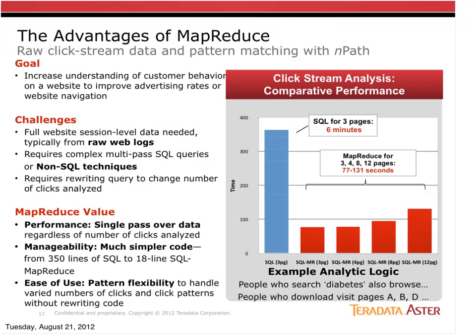This is an example of a customer we worked with who was trying to do pathing analysis across their website — looking at what were the three pages somebody looks at over time before taking a certain action. They were running that in a SQL database, and when we ported that to a SQL MapReduce function, there was something like a 6x performance improvement. What's really interesting is that as the analyst wanted to expand the scope of the analysis to four, eight, or twelve pages, it was easy to change that scope — just a parameter through a BI tool in a SQL statement that can invoke the MapReduce engine underneath. It also does all of that in a single pass of the data: less code, more performant, and it provides flexibility to the analyst to do data discovery without incurring a lot of overhead.